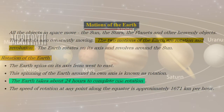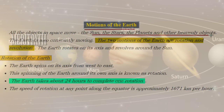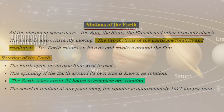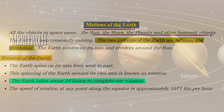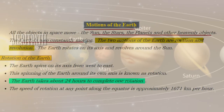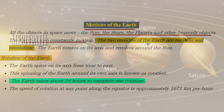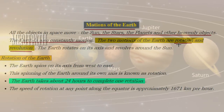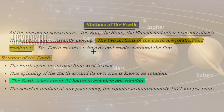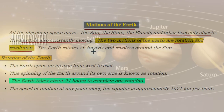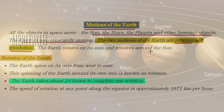Let's learn about a new chapter called motions of the earth. All the objects in space move, such as stars, planets, and other heavenly objects like meteoroids, comets, satellites, etc. Same way, the earth also is moving. Earth moves in two directions, known as rotation and revolution. Earth rotates on its own axis, and while rotating around itself, it also revolves around the sun.